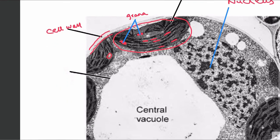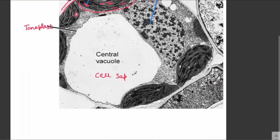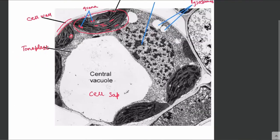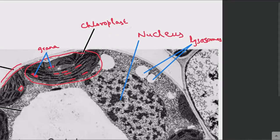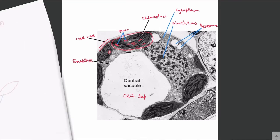This structure over here is the tonoplast, which is the membrane of the sap vacuole. Inside the sap vacuole there is cell sap, and this vacuole is the central vacuole or sap vacuole. We can also see the lysosomes in this image. And this over here is the cytoplasm. We are now done with the electron micrographs of the plant cells.